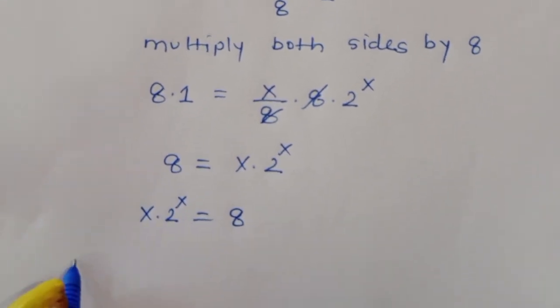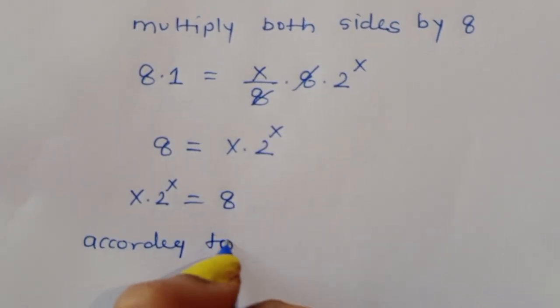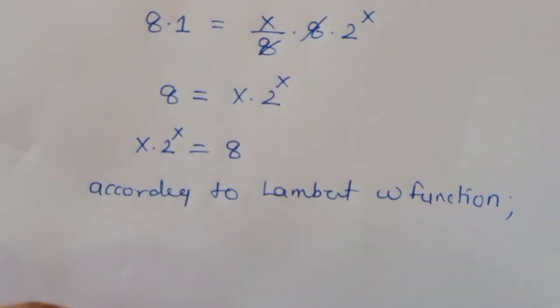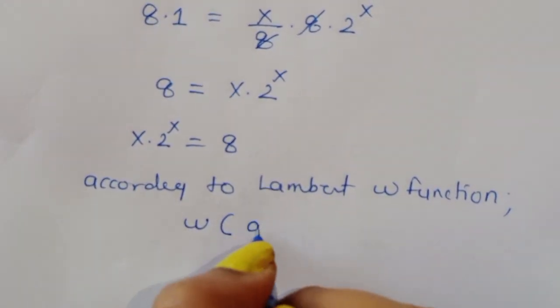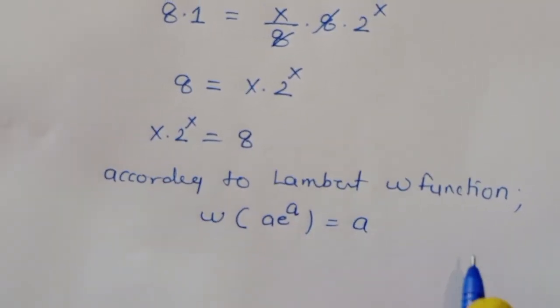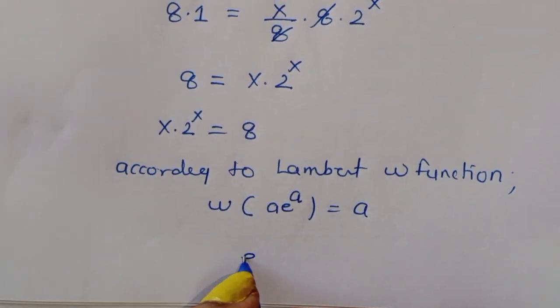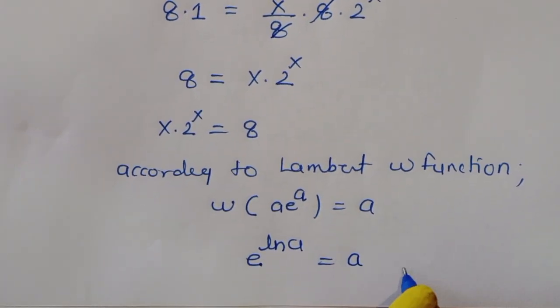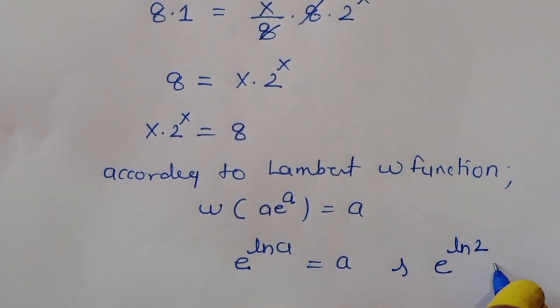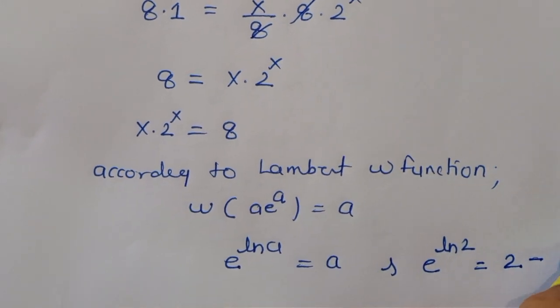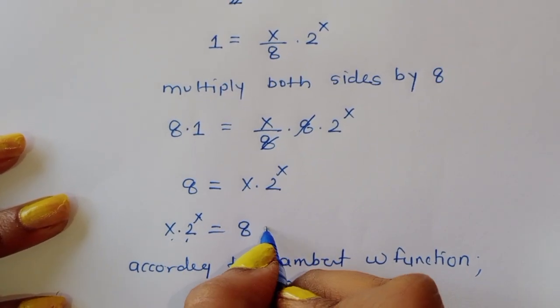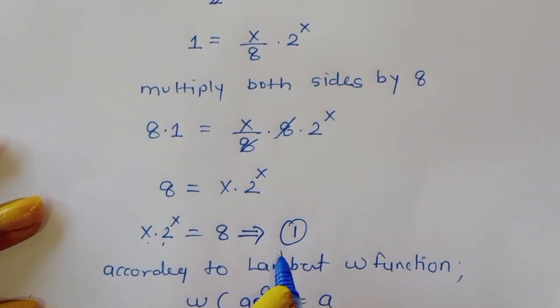According to the Lambert W function, we note that e power ln of a equals a, so e power ln of 2 equals 2. This is equation 2. And equation 1 is x times 2 power x is equal to 8.